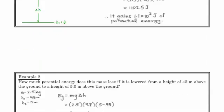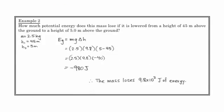Another example. How much potential energy does this mass lose if it's lowered from a height of 45 meters above the ground to a height of 5 meters above the ground? So here h1 is 45 meters, h2 is 5. And so now delta h is going to give us a negative answer.